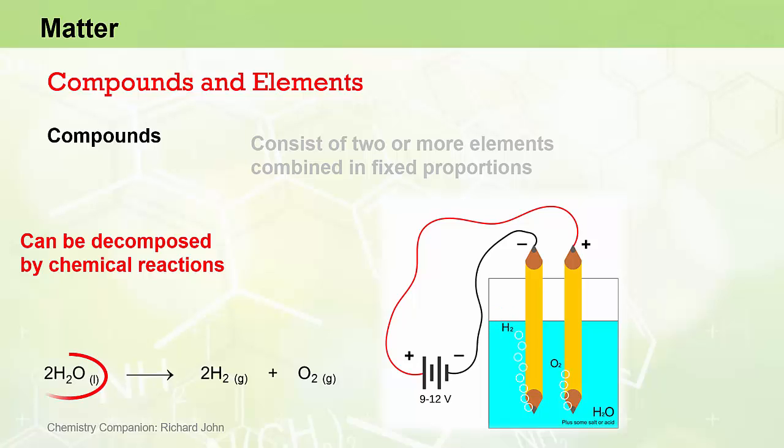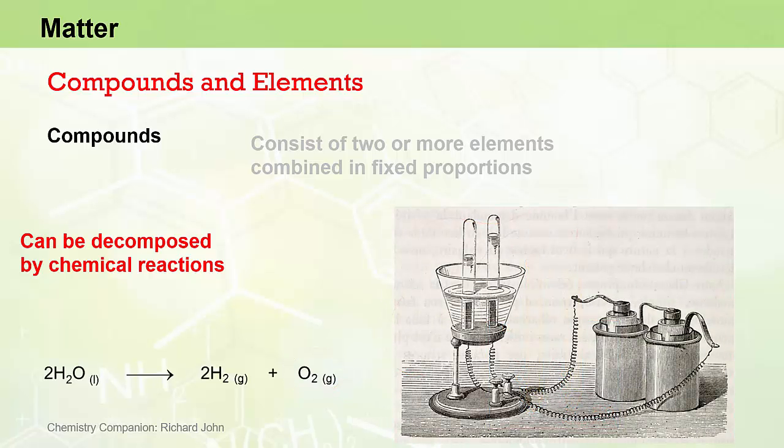And in this chemical reaction, two molecules of water are broken down to produce two molecules of hydrogen and one molecule of oxygen. So if we had an apparatus where we could collect the gases formed from these electrodes, we would see that we would actually collect twice as much hydrogen gas as we do oxygen gas, and that's in agreement with the decomposition reaction.